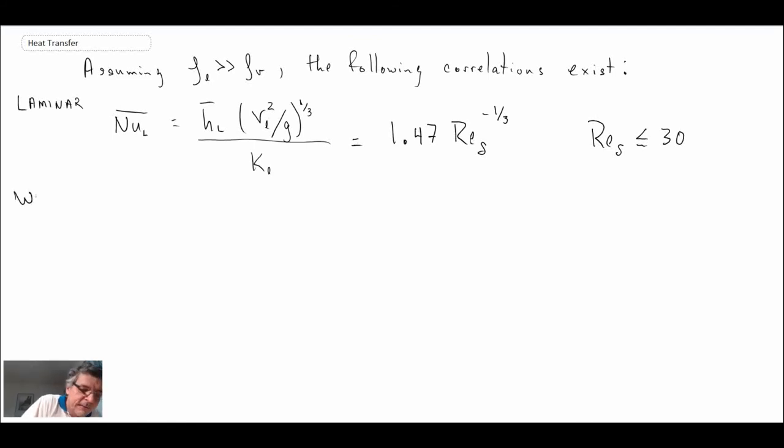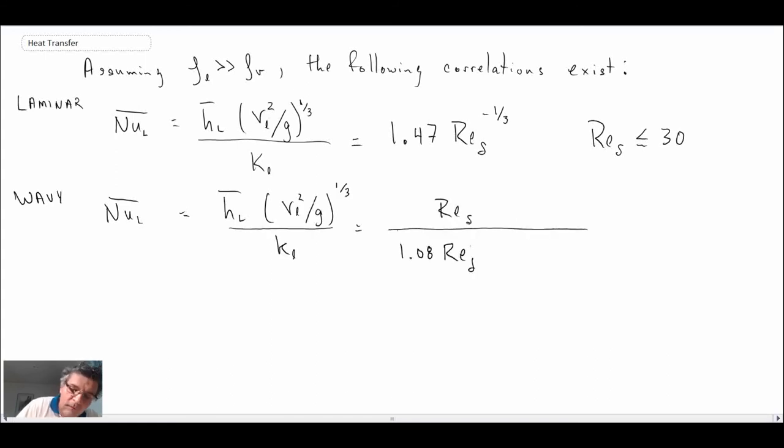Going on into the wavy regime, this would apply for Reynolds number between 30 up to 1800.